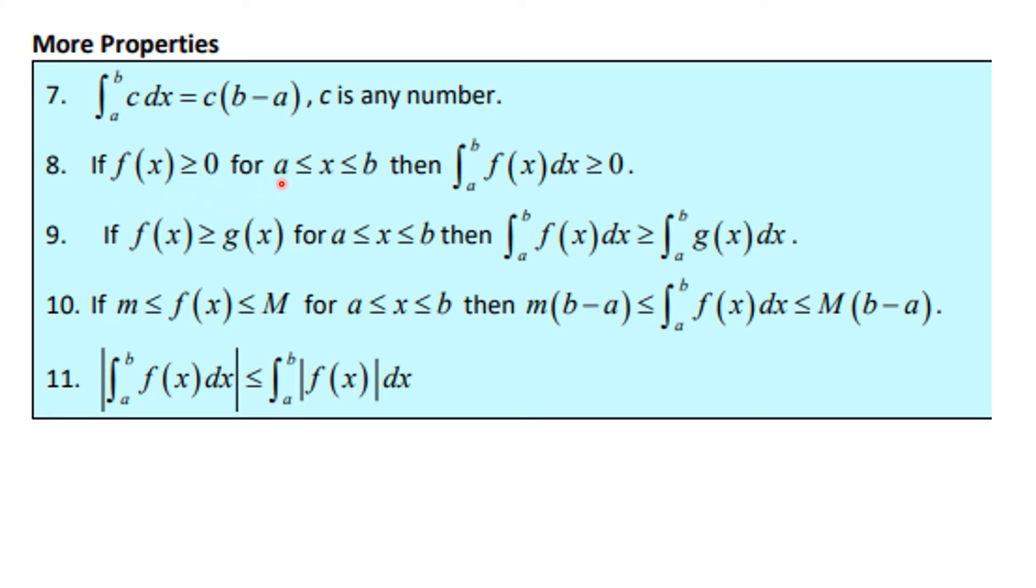If f(x) is greater than or equal to 0, then the integral of f(x) is greater than or equal to 0. If f is bigger than or equal to g, then the integral of f(x)dx is bigger than or equal to the integral of g(x)dx. And if f(x) is caught between little m and big M, then the integral of f(x)dx is caught between m times (b minus a) and capital M times (b minus a). And the absolute value of the integral from a to b of f(x)dx is less than or equal to the integral from a to b of the absolute value of f(x)dx.